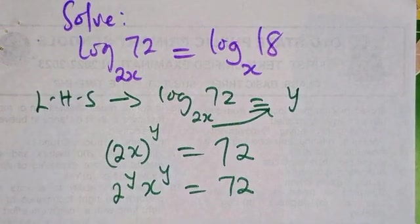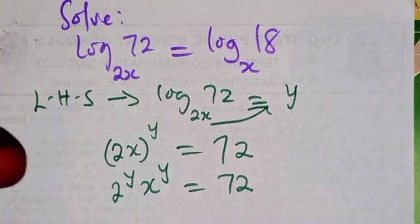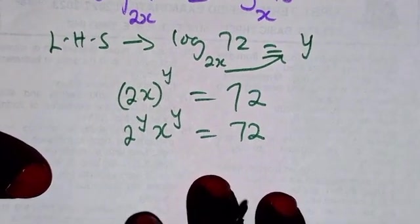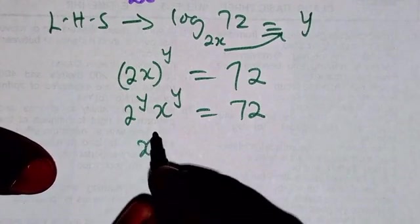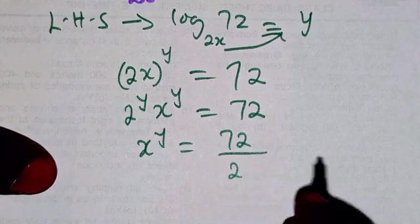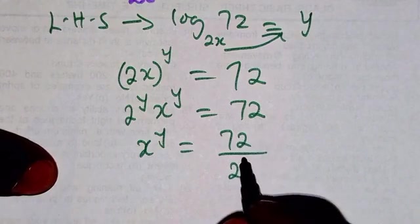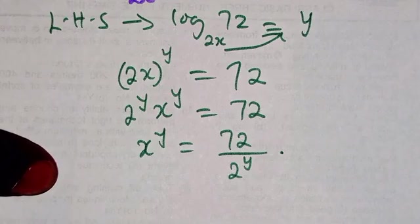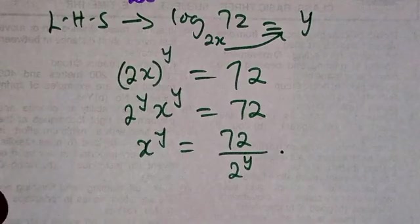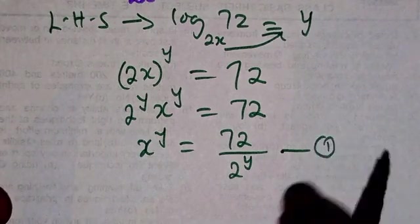Now let's get x to power y. If I want to know x to power y, it's going to be 72 divided by 2 to power y. Let me call this equation 1.